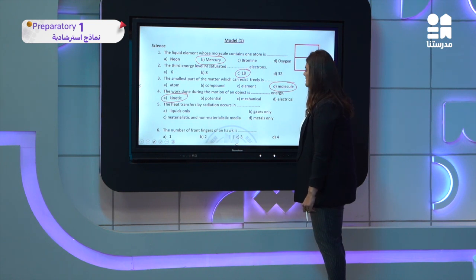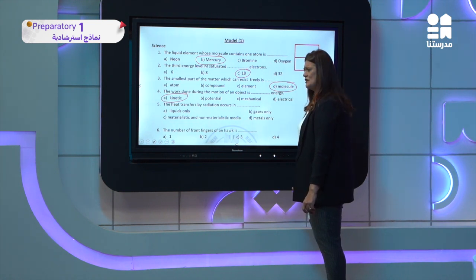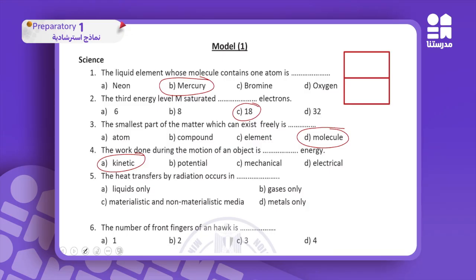Heat transfer by radiation occurs in: liquid only, gases only, metal only, or a non-materialistic medium? Of course radiation can move through gases and space — it travels through a non-materialistic medium.